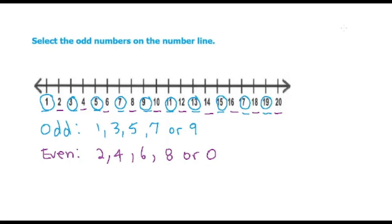So you just need to remember this rule. Odds are 1, 3, 5, 7, or 9. And evens are 2, 4, 6, 8, or 0.